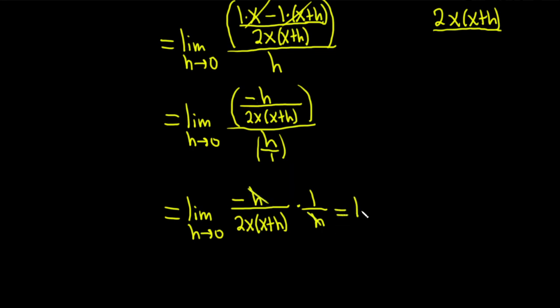These cancel. And so this is equal to the limit as h approaches 0 of negative 1 over, and we have 2x, and then x plus h.